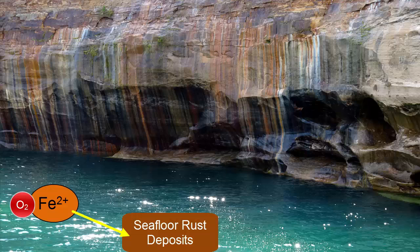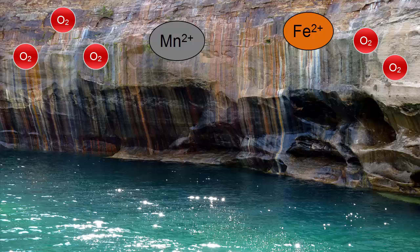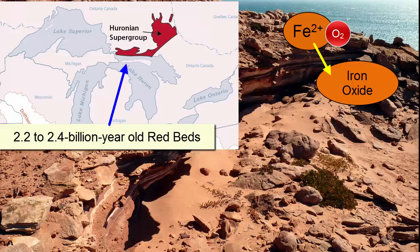Once the majority of the dissolved iron in the oceans was removed through iron oxide precipitation or rusting, oxygen was free to mix through the oceans and bubble up and enter the atmosphere, where it became available for the oxidation of atmospheric gases and dissolved metals in weathering surface rocks and rivers and lakes. The oldest evidence we find of this activity, and thus oxygen gas accumulating in our atmosphere, are from the north shore of Lake Huron, Ontario, Canada — redbeds, iron oxide-rich rocks formed on Earth's surface, dated between 2.2 and 2.4 billion years old.